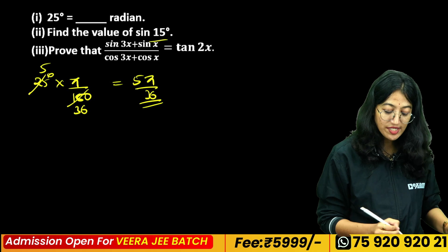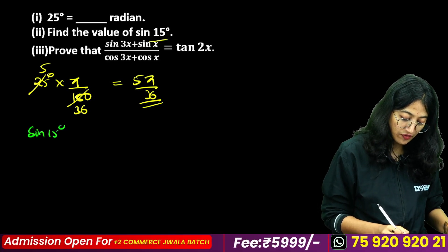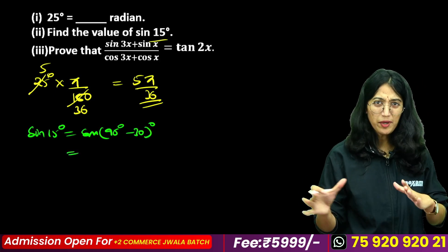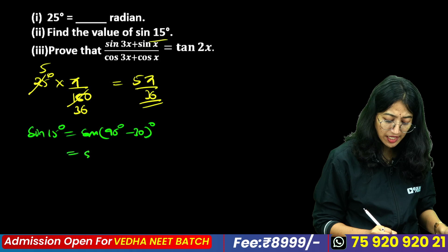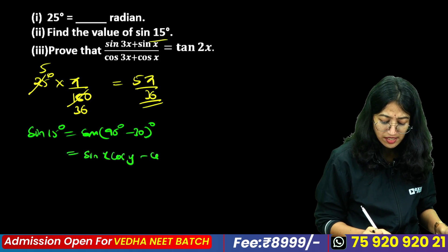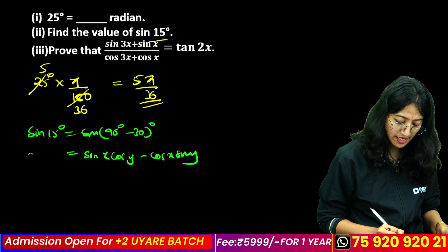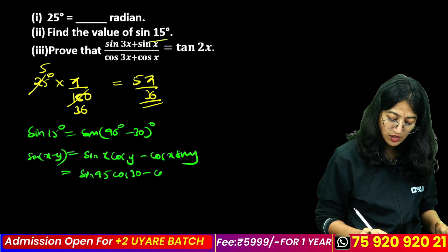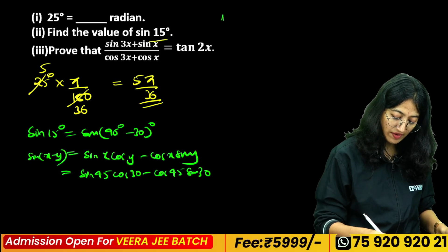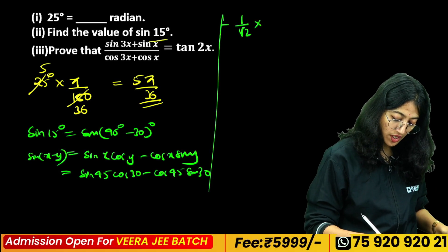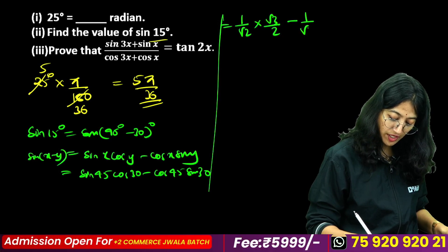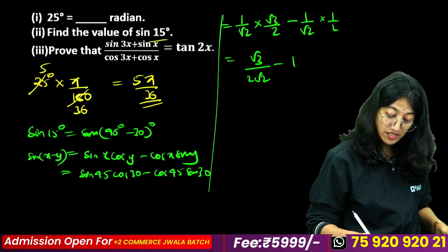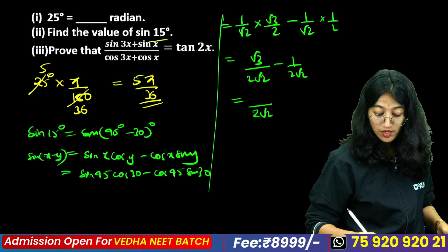Find the value of sin 15°. Sin 15° = sin(45° – 30°) = sin 45° cos 30° – cos 45° sin 30°. Using cos 45° = 1/√2 and sin 30° = 1/2, the answer simplifies to (√6 – √2)/4, or equivalently (√3 – 1)/(2√2).